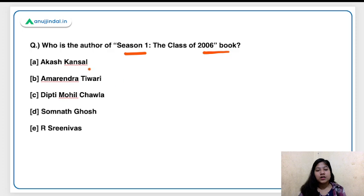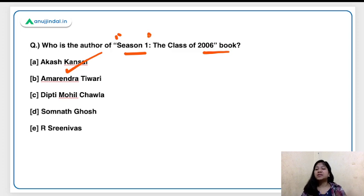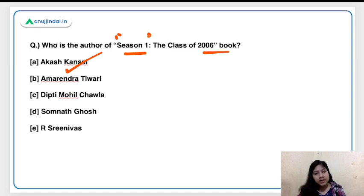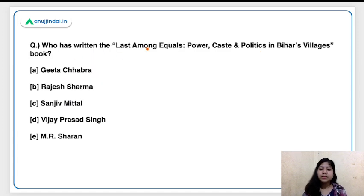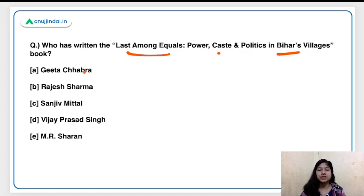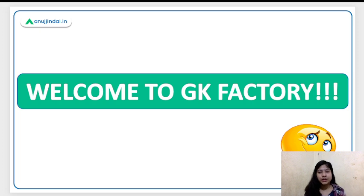Who is the author of 'Season One: The Class of 2006'? The answer is Akash Kansal. This book is released in a season-style manner like a web series, and more seasons are coming. This is the first time in India a book has been released in this format. The book 'Last Among Equals: Power, Caste and Politics in Bihar Villages' was written by Mr. Sharan.